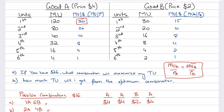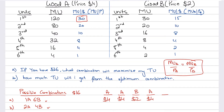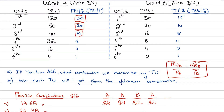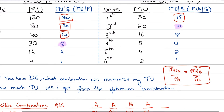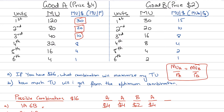With only 2 dollars remaining, I can only afford good B. So the fifth unit is the second unit of good B, giving a MU per dollar of 10. I now have exhausted all 16 dollars. My final bundle is 3 units of good A and 2 units of good B. This is the optimum combination.